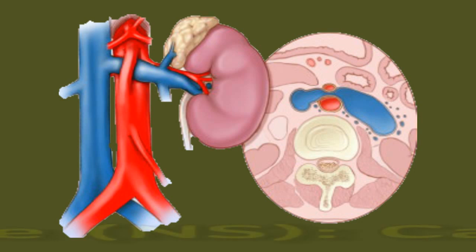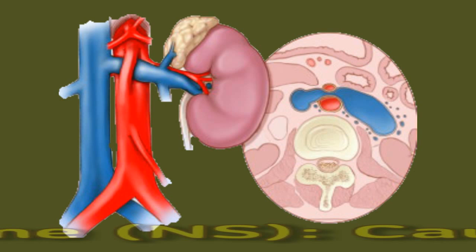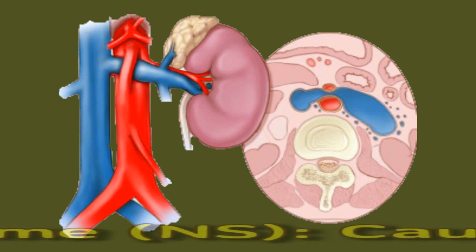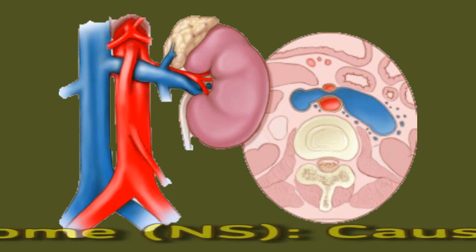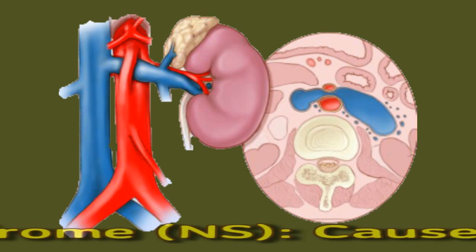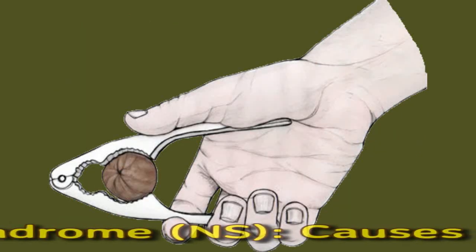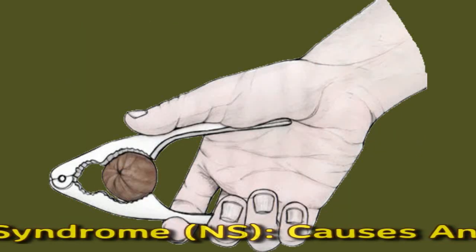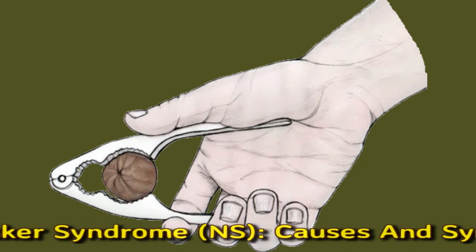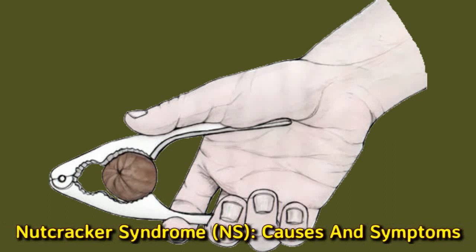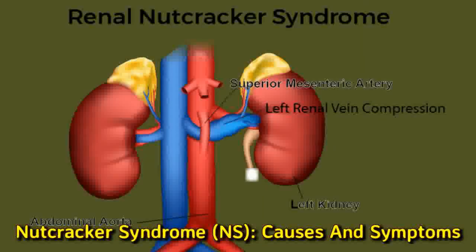Nutcracker syndrome causes and symptoms. Nutcracker syndrome, or NS, is a condition in which two arteries compress the left renal vein, or LRV, interfering with blood flow out of the left kidney. The condition has this name because the compression resembles a nutcracker cracking a nut.